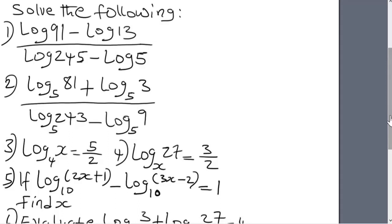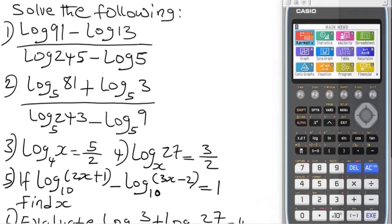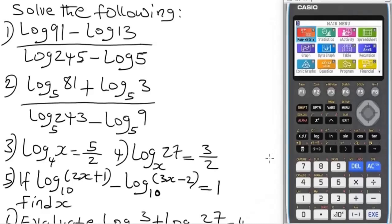This is Casio FX-CG50 Graphical Calculator. Now the very first thing you have to do is reset the calculator. The sense of resetting it is to wipe out whatever previous value you might have stored in the calculator.